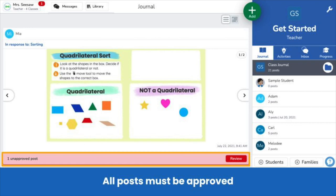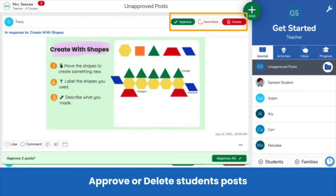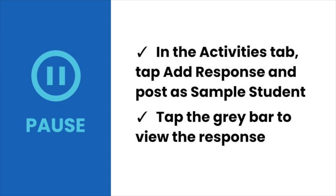Note that all posts must be approved by the teacher before they're visible in the class journal. When there are student posts for you to approve, a red bar appears on the bottom of your screen — tap review, then review each post and approve or delete. Note that deleted posts cannot be recovered. Pause the video now. In your teacher account, pretend you're a student — go to the activities tab, tap add response, select sample student, and complete the activity.